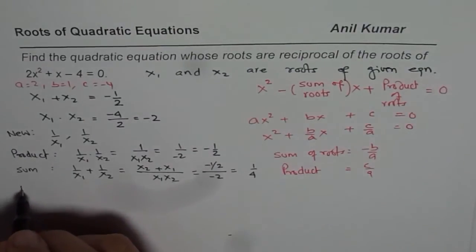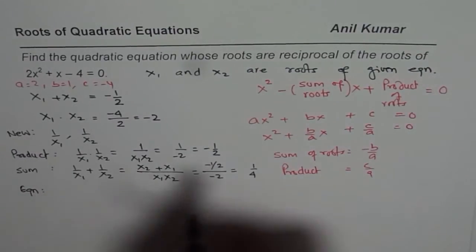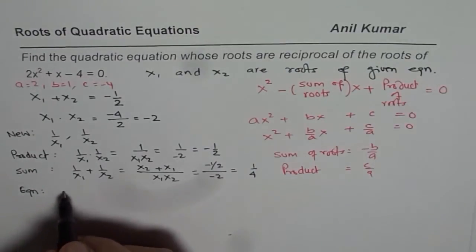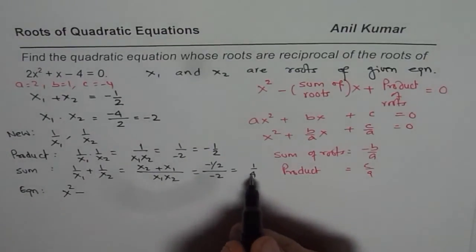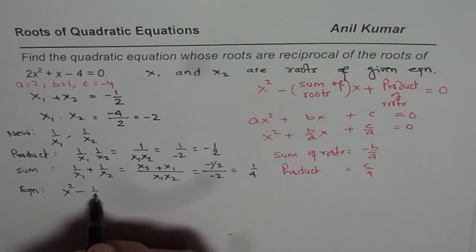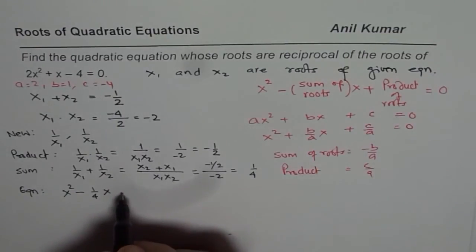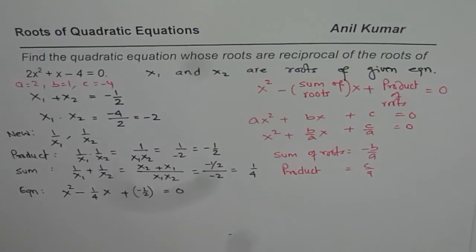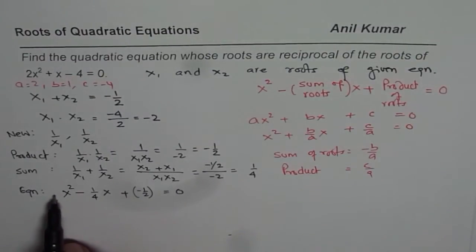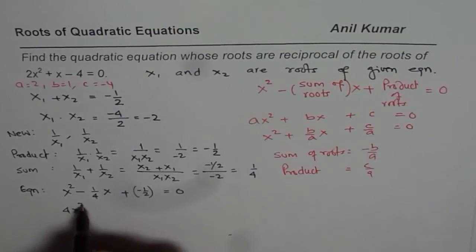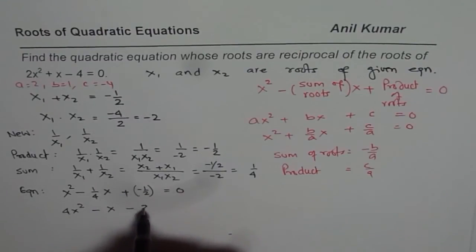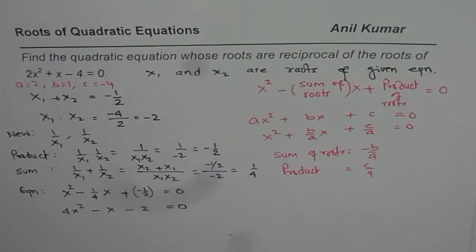Therefore, the equation will be: x squared minus (sum of roots) times x plus (product of roots) equals 0. So that is x squared minus (1 over 4)x plus (minus one-half) equals 0. Multiplying each term by 4 to write the equation in standard form, we get 4x squared minus x minus 2 equals 0. So that becomes our answer.